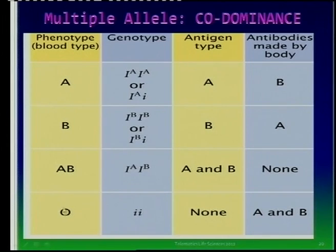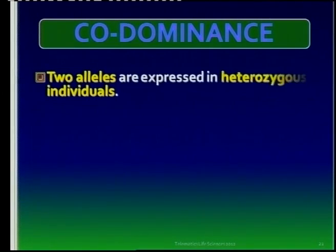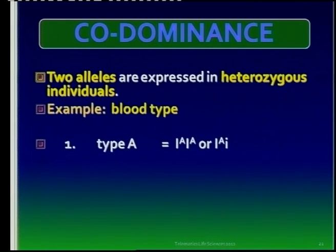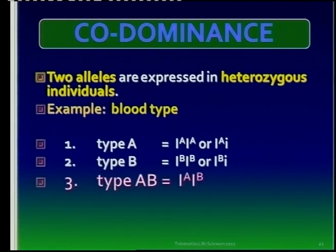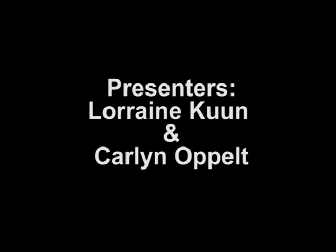The phenotype is what the nurse writes on your card when you go to be a blood donor. To summarize: co-dominance means two alleles are expressed in heterozygous individuals. Blood type is a key example of co-dominance that learners must know.